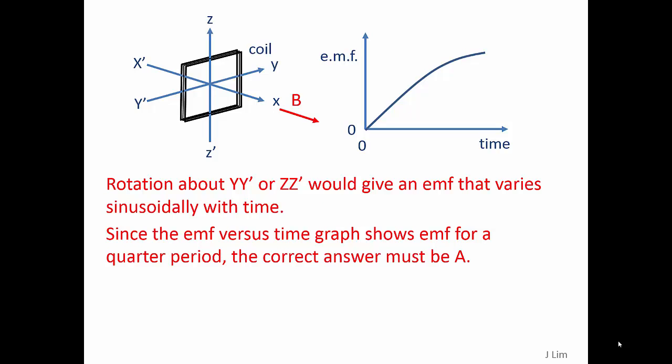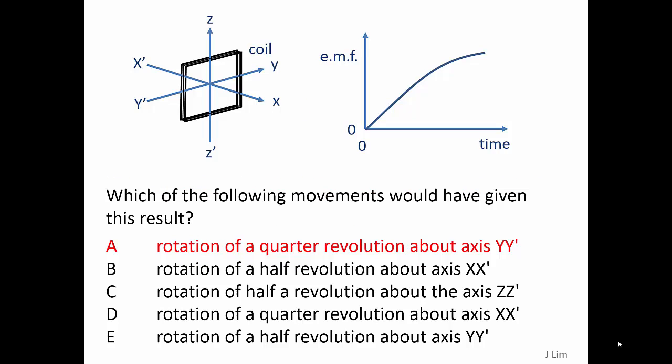Rotation about Y, Y', or ZZ' would give an EMF that varies sinusoidally with time. Since the EMF versus time graph shows EMF for a quarter period, the correct answer must be A.